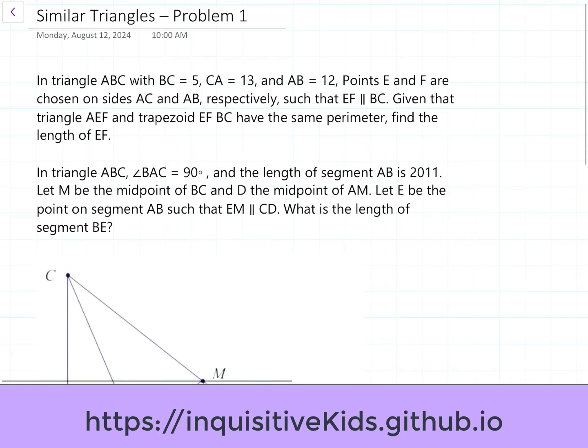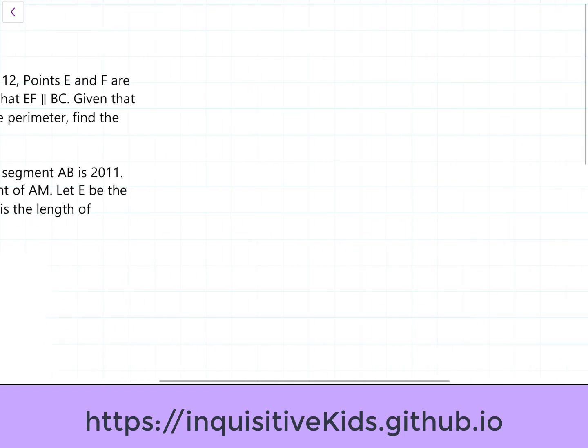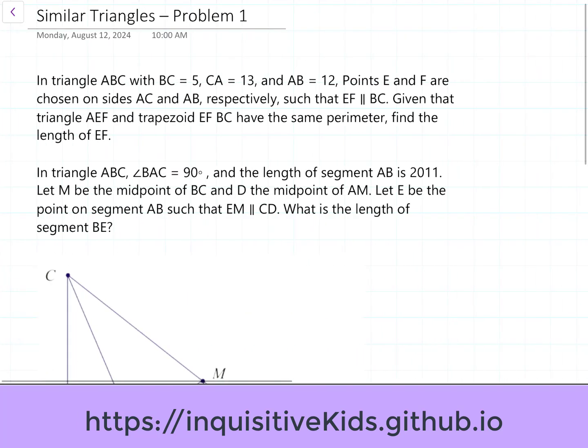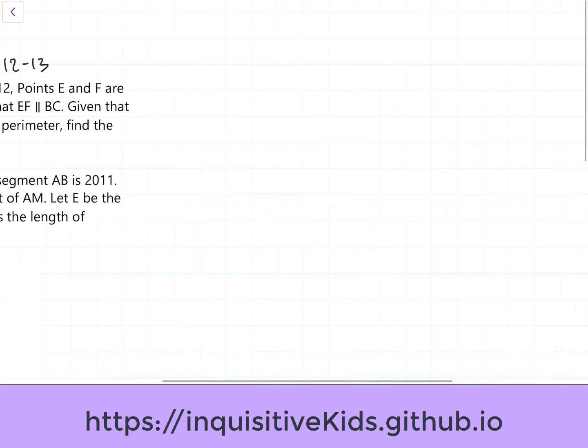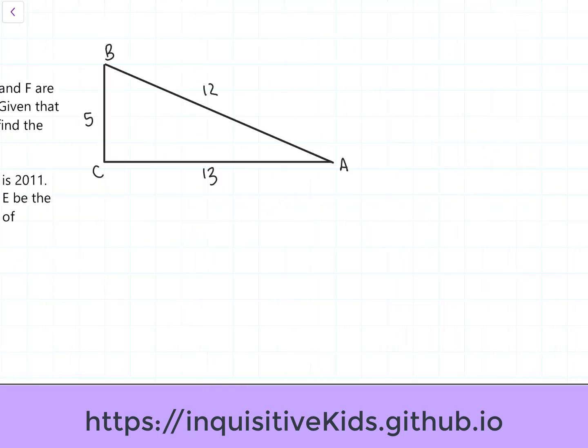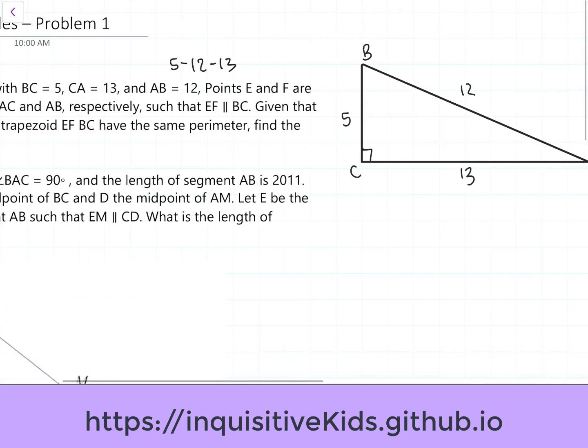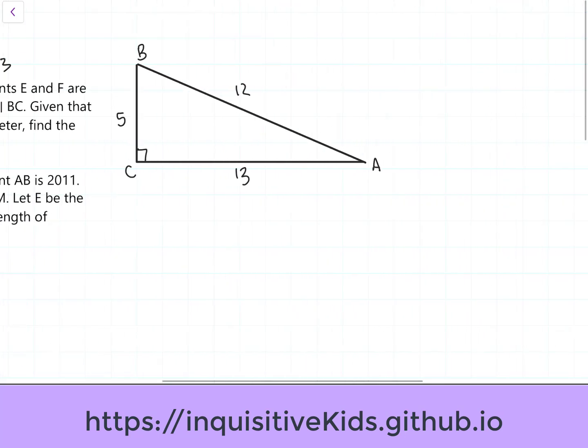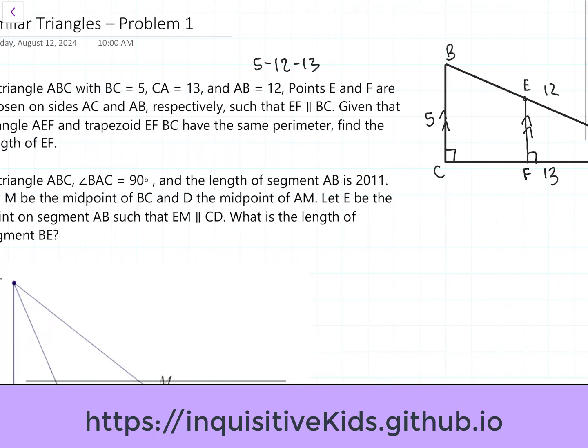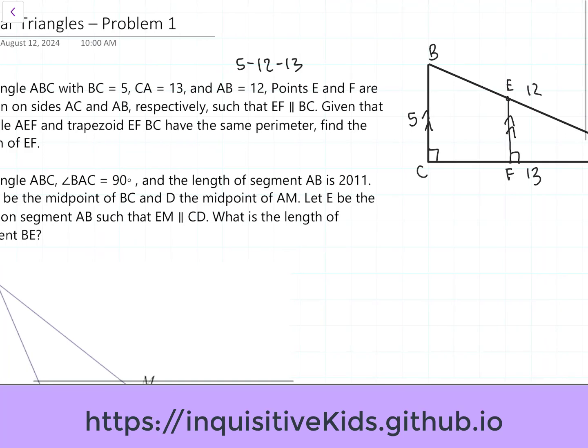Let's start by drawing the picture that we get from this problem. We know this is a 5 to 12 to 13 right triangle, so it should look something like this. Now we have a right triangle. We also know we have to take E and F, so let's just put it here. E and F, and these two sides are parallel. This will also then become a right angle, and they have the same perimeter, so what is EF?